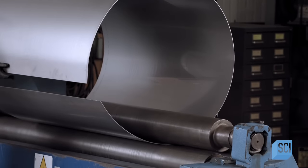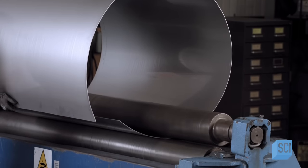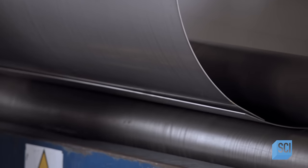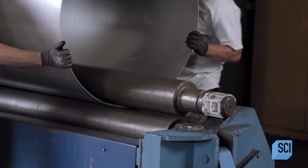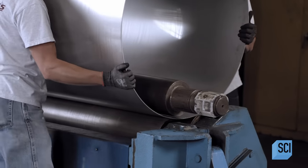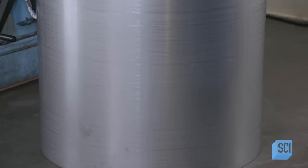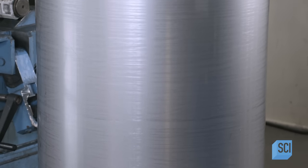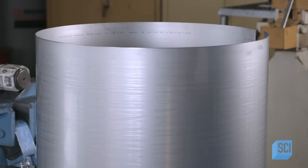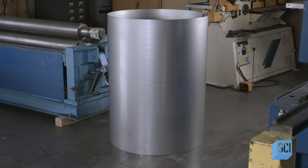To shape the roast chamber, workers feed a sheet of stainless steel through a sheet metal roll. The roast chamber is the drum in which the beans roast by convection heat. The next step is to weld the rolled sheet into a cylinder. Then, workers grind and polish the welds until they're flat, smooth, and shiny.